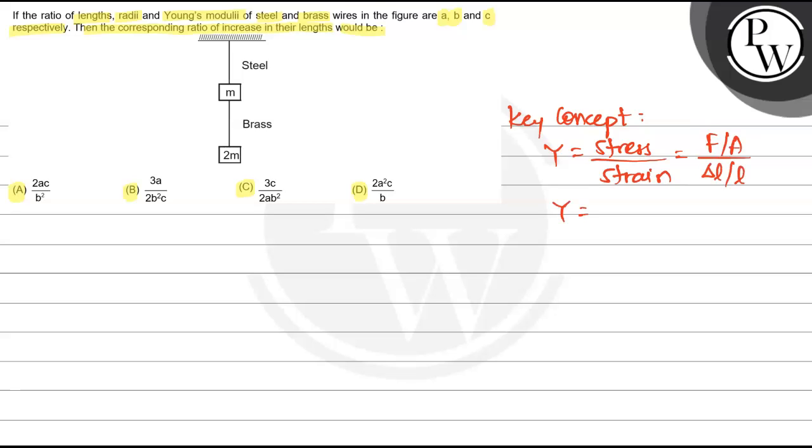Simplifying this, the formula becomes Y equals FL divided by A delta L, which we will use.